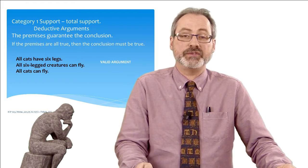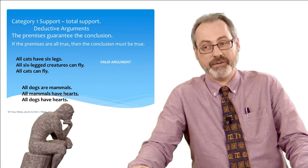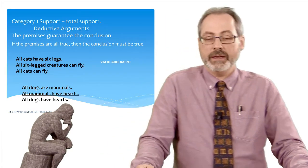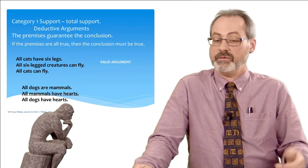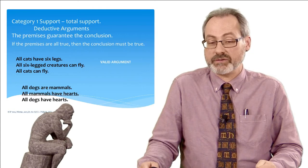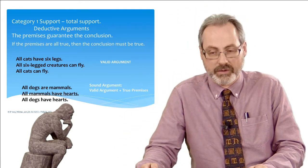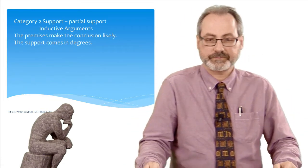Now here's a second example of a deductive argument. All dogs are mammals. All mammals have hearts. Therefore, all dogs have hearts. The first premise is meaningful and true, the second is meaningful and true, and the third is meaningful and true. If the premises are true, then the conclusion must be true — it is a valid argument. And the premises are in fact true. So this is what we call a sound argument: a valid argument with true premises.